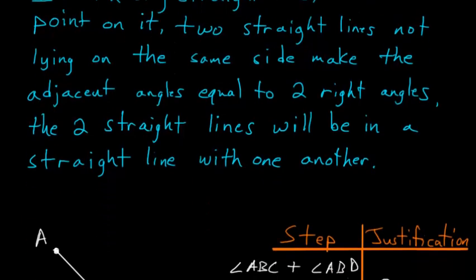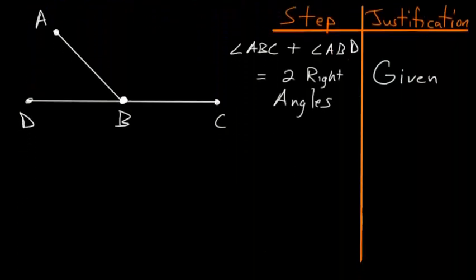So what this is saying is that if we have two lines AB and DC and if we know that the angles contained by these lines add up to two right angles, then what we're essentially trying to prove is that the line DB is in a straight line with the line BC.